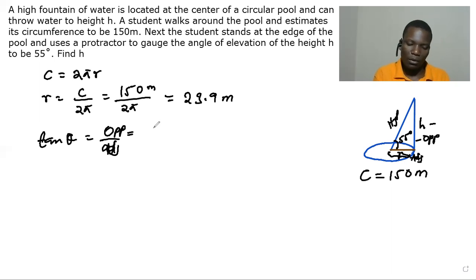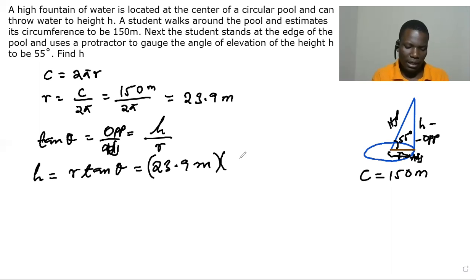And this opposite is the h we are looking for over radius. So we have h equal to tan θ times r. We substitute our radius 23.9 meters and multiply by tan 55 degrees. So our radius is going to be 34.9 meters.